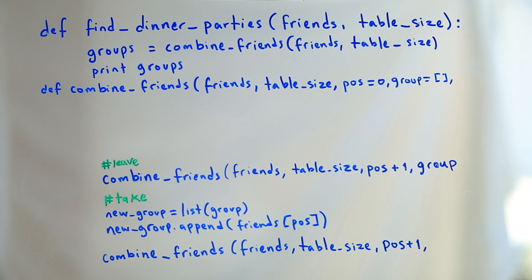The last thing I have to do is append my current friend, my friend at the current position, into that new list, so that in the right branch of the recursion, the list grows by one. This is starting to look like a real function. It's starting to look like what we need.